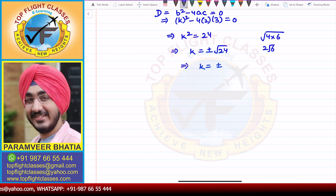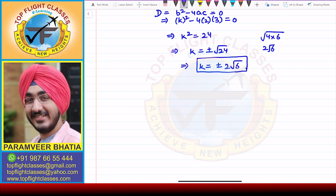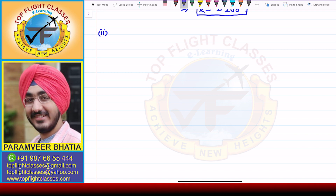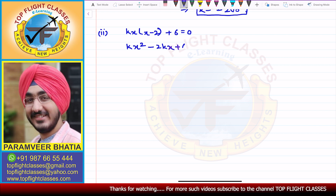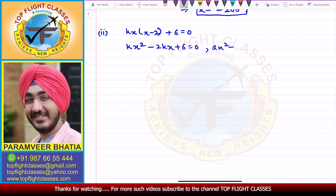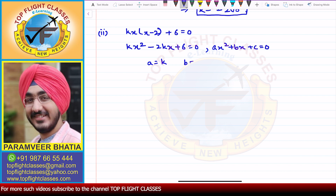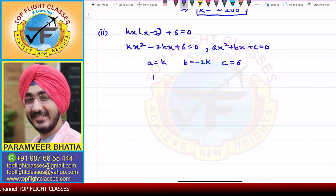For part (ii), the equation is k(x)(x - 2) + 6 = 0. Expanding the bracket, we get kx² - 2kx + 6 = 0. Comparing with ax² + bx + c = 0, we get a = k, b = -2k, and c = 6.